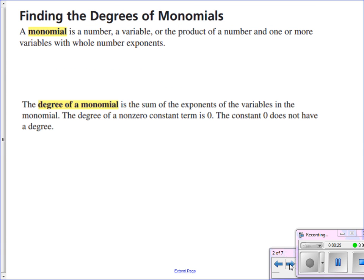All right, so first of all, a monomial. You may recognize the prefix of that word 'mono' as meaning singular, like it's the opposite of stereo. So if sound is in mono, it's only coming out of one speaker. A monomial is a number, variable, or the product of a number and one or more variables with whole number exponents. So whole numbers — those are positive exponents and they're not fractions.